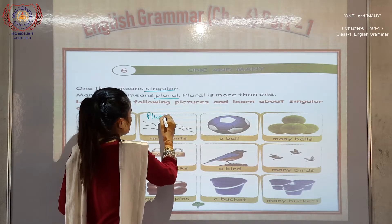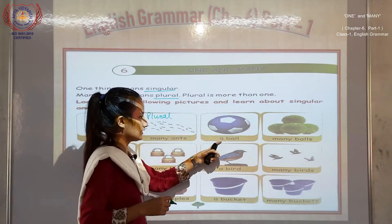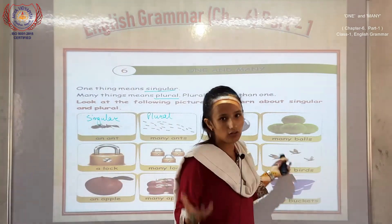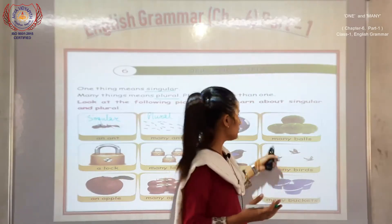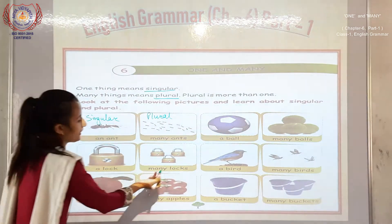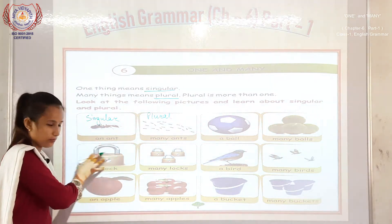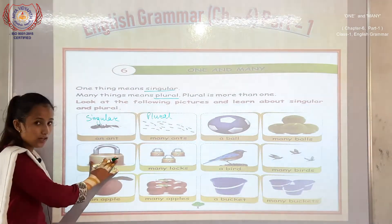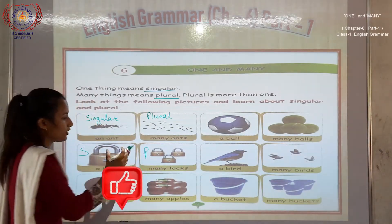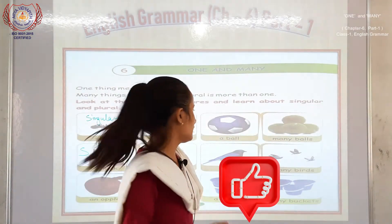Next: a ball — this is singular. And this is many balls — bohut sara hai wahaan par — so this is plural. A lock, many locks — yahaan par ek taala hai, that is singular, and locks — bohut sara — plural. Many ka matlab plural, one ka matlab singular.